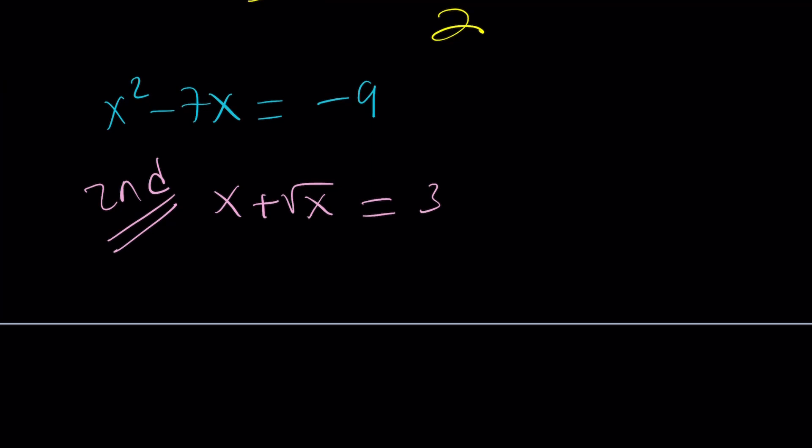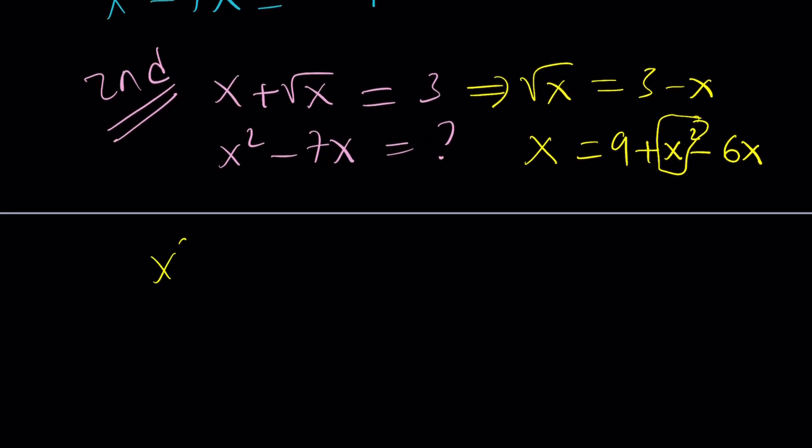Here's how the second method works. We're going to try to find x² minus 7x without finding the x values. That's going to be the cool part about this. Again, we're going to isolate square root of x. Write it as follows. Then square both sides. Yes, this part is the same, but we'll continue differently. When you square square root of x, you get x. Now I'm going to isolate x². So I can add 6x to both sides and subtract 9. So x² is going to be 7x minus 9 from here.